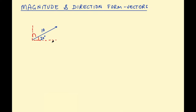I'd encourage you to think about how you might go ahead and do this conversion. A column vector gives you the horizontal distance and the vertical distance. So as long as we can find those two lengths, we'll have the column vector. We can think of this as a right triangle, with the right angle at the base, giving us an angle and the hypotenuse.